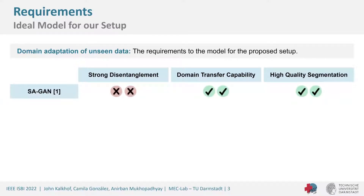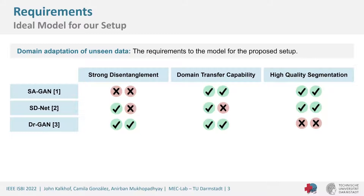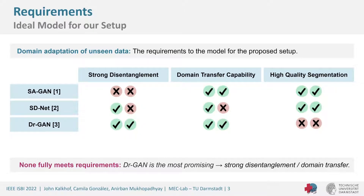The first method is S-Argon, a domain transfer model, but it can only transfer between two domains and does not support disentanglement — a problem since we want multiple domains in the learning process. Next is SDNet, which is very good at segmentation but doesn't perform well enough in the other two requirements. Lastly, Diagon is very good at disentanglement and domain transfer but is not designed for segmentation and therefore needs to be modified. None of these fully meets our requirements, but Diagon is the most promising, with the strongest disentanglement and domain transfer capability.